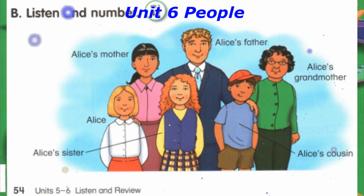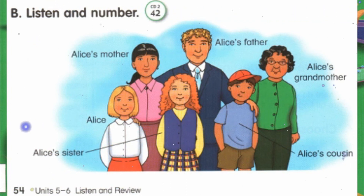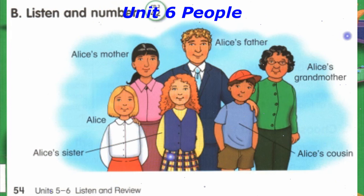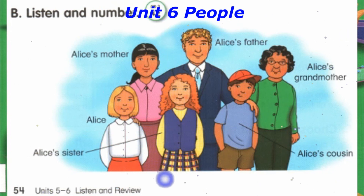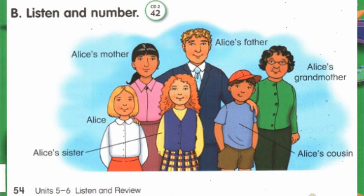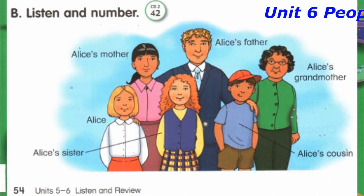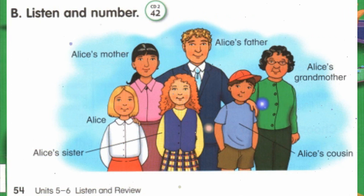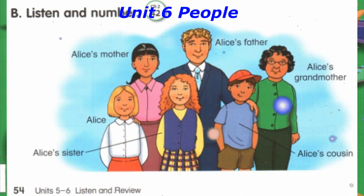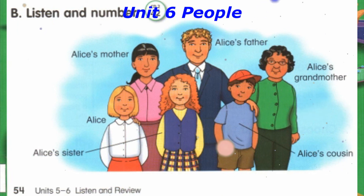Number 4: Alice has straight blonde hair and blue eyes. She's wearing a white blouse and a skirt. Number 5: Alice's cousin is the boy with brown hair and bangs. He's wearing a t-shirt, shorts, and a baseball cap. Number 6: Alice's father is the man with curly blonde hair and blue eyes. He's wearing a suit and tie.